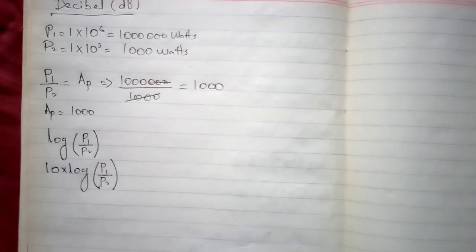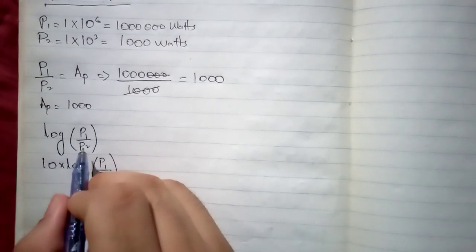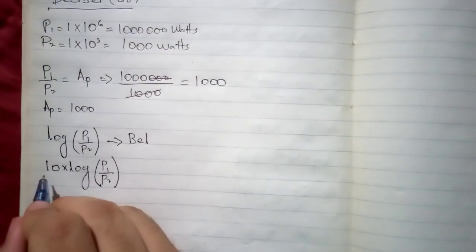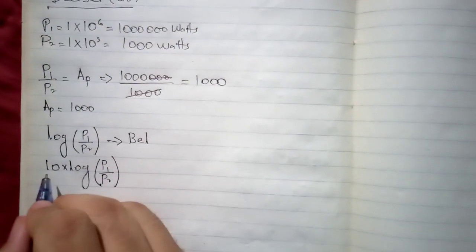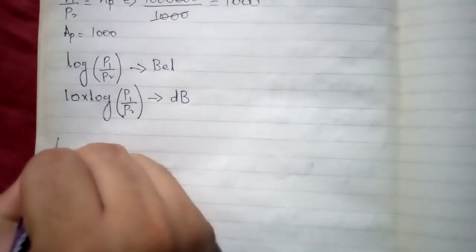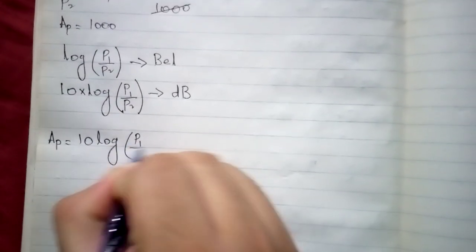Now students, you will ask a question, Sir, why are you multiplying 10 with the log? Because I want to convert it in decibel. When you are taking just log of P1 upon P2, it's converted into the unit which is called Bell. And in the next step, you have multiplied it by 10, so now it's converted into the unit of decibel. So this is the formula for power gain, 10 log P1 upon P2, which is in the unit of dB.